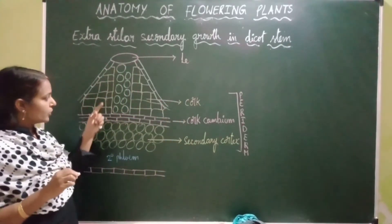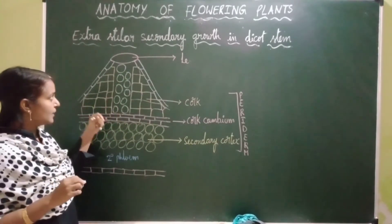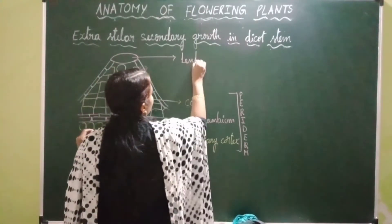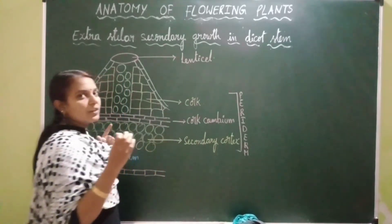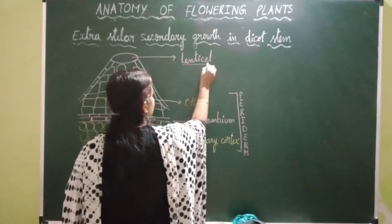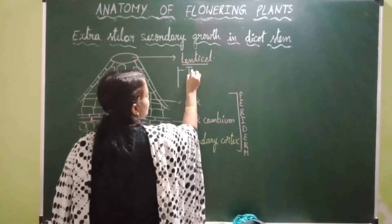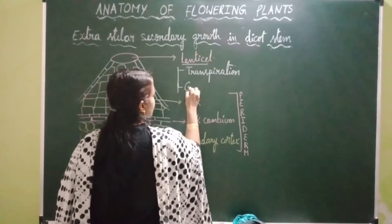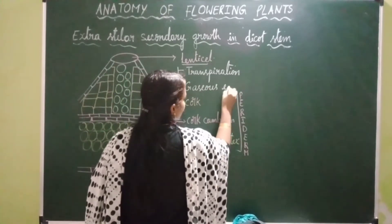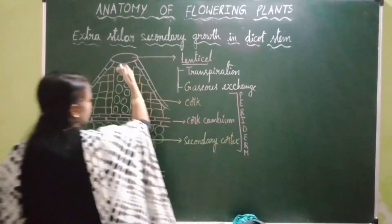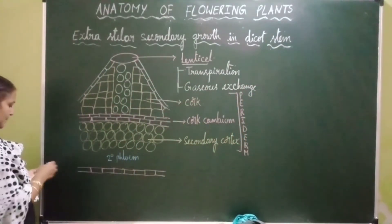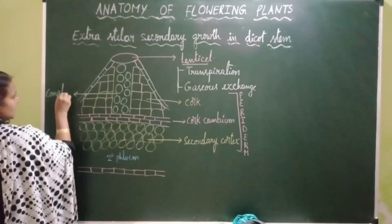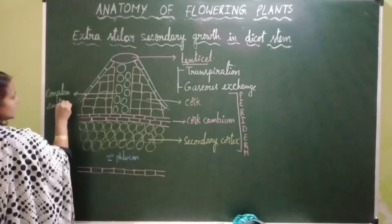Cork cambium produces thin-walled parenchymatous cells which exert pressure towards the epidermis, resulting in the breakage of epidermis and formation of an opening called lenticel. It is called lenticel because this opening is in the form of a lens — it is a lens-shaped opening. The function of lenticel is to perform transpiration and gaseous exchange; the main function is gaseous exchange. The thin-walled parenchymatous cells present below the lenticel are also called complementary cells.